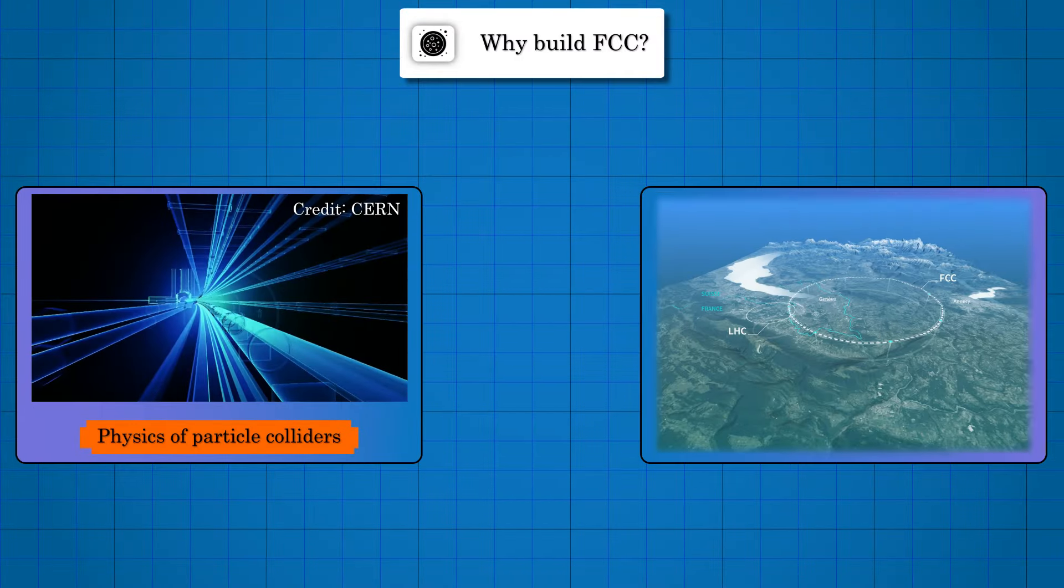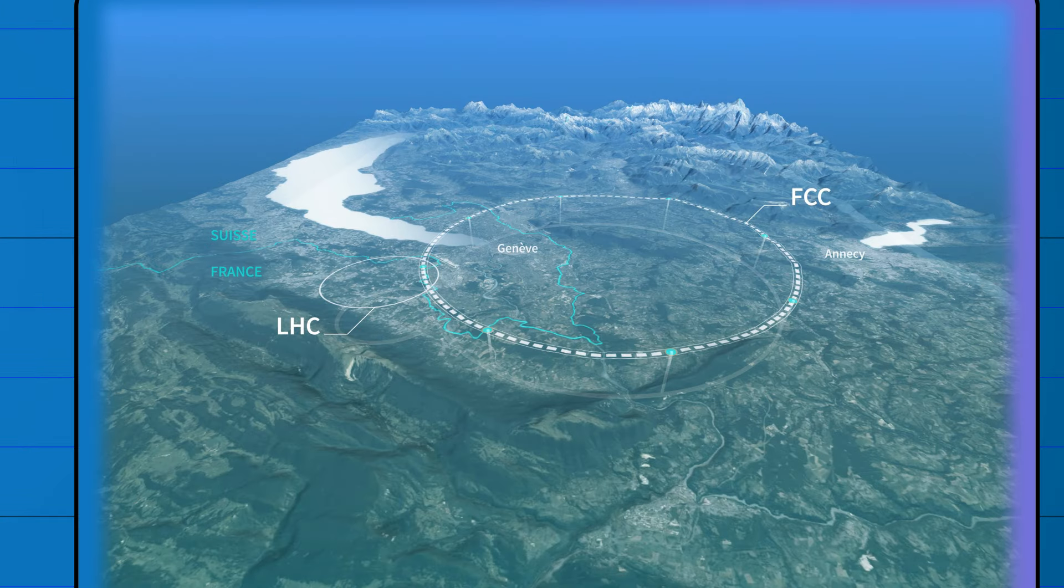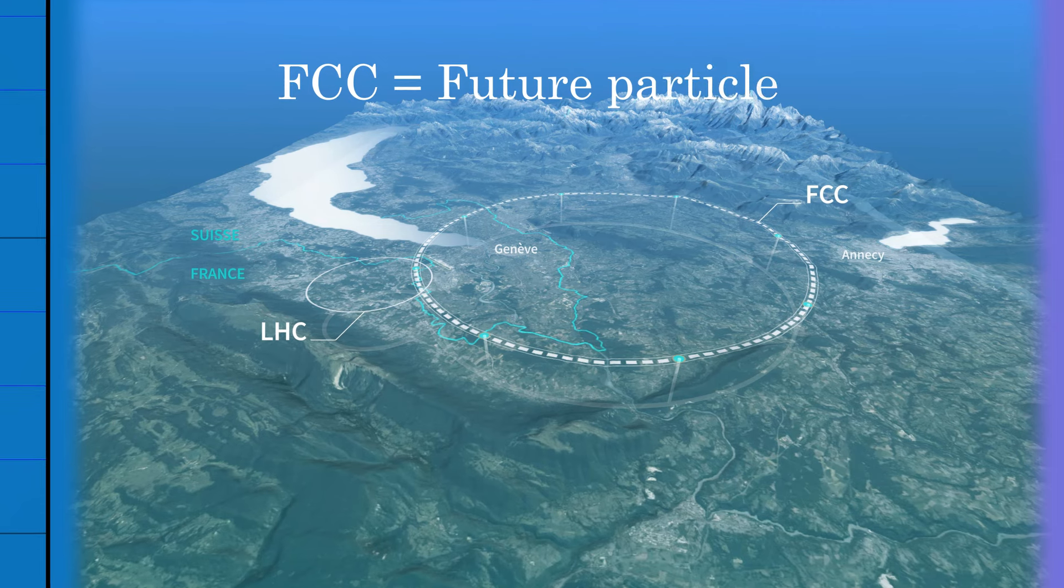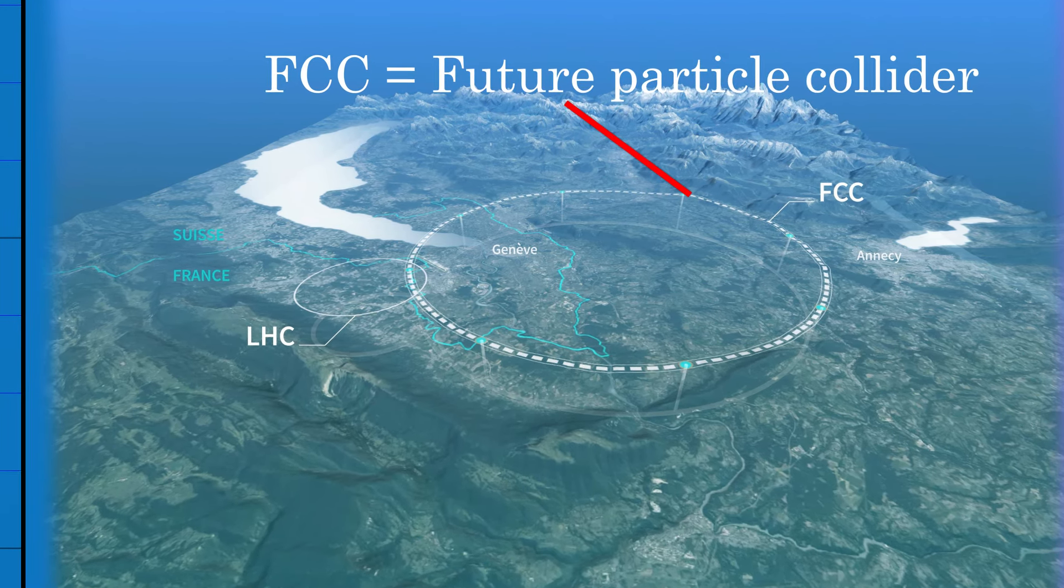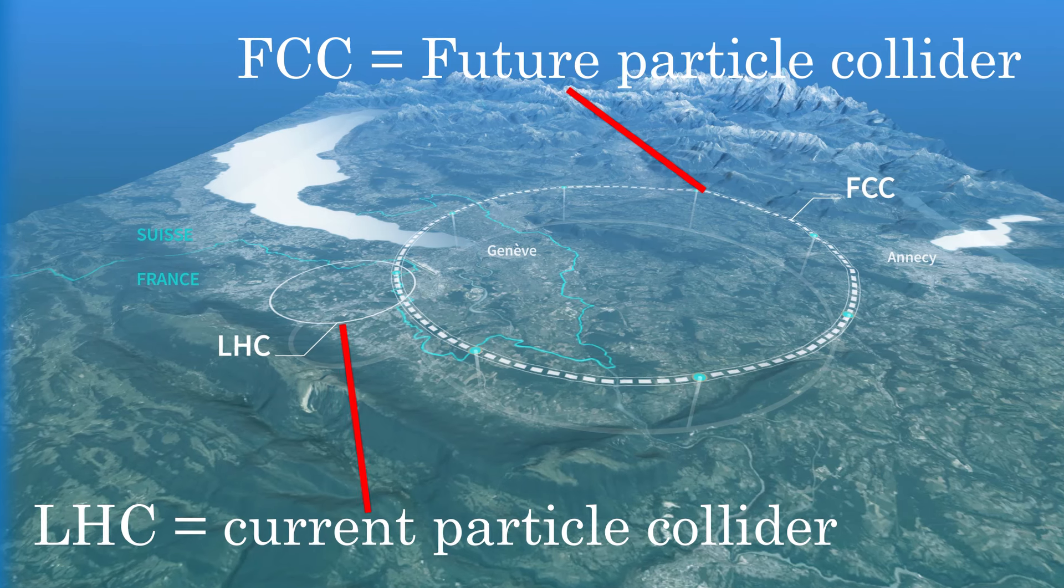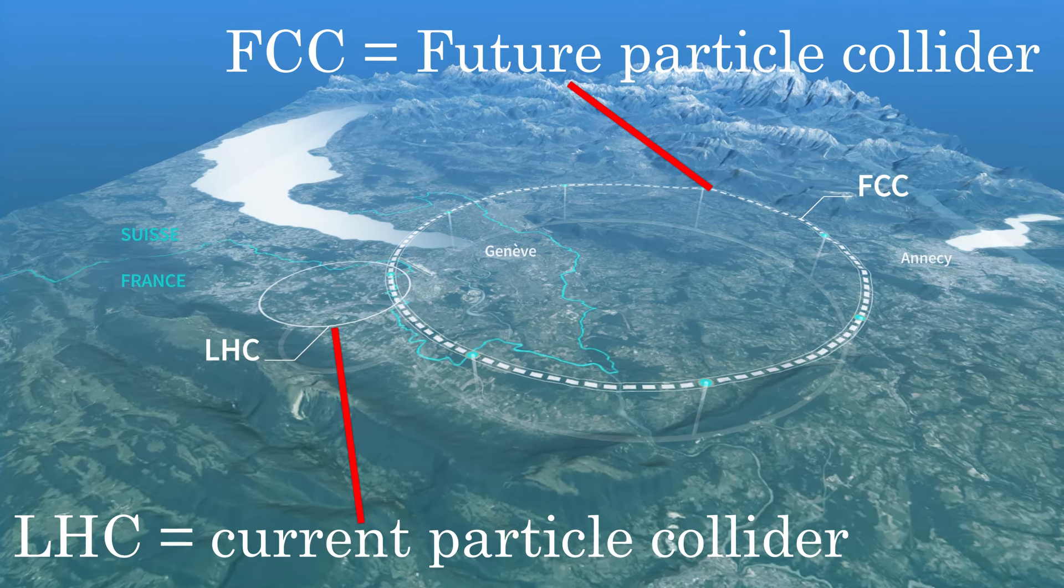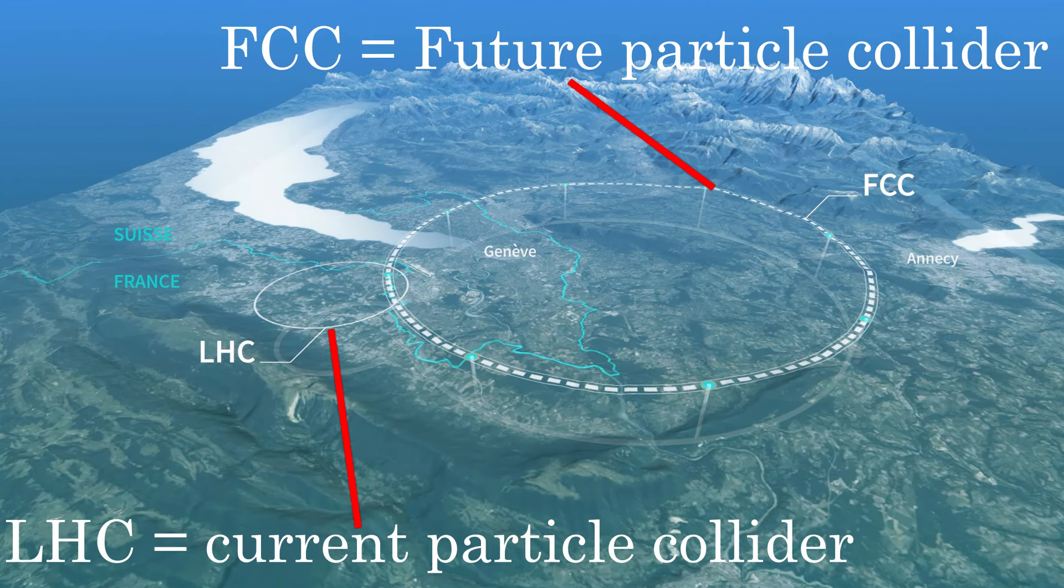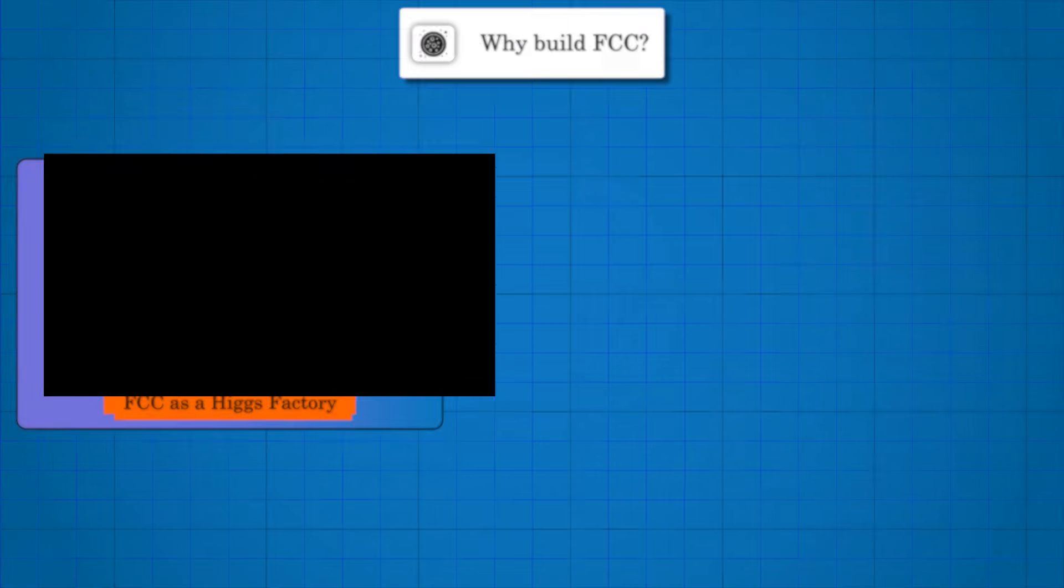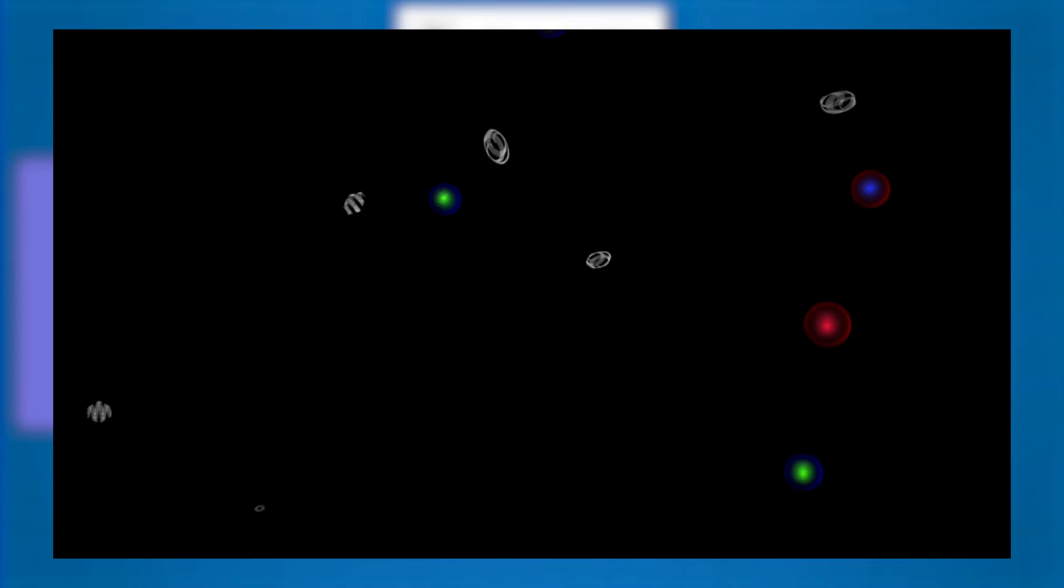This is the justification behind building the Future Circular Collider (FCC), which is supposed to be the supersized successor to the Large Hadron Collider (LHC), with an estimated cost of $21 billion. Compared to the LHC, which spans 27 kilometers, the FCC is designed to be more than three times larger in circumference. This size increase will enable the FCC to reach collision energies far higher than those achievable by the LHC.